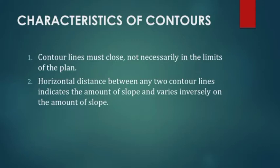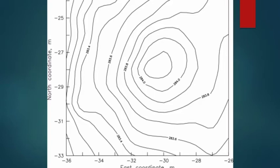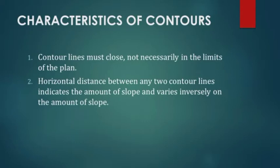Moving on to characteristics of contours — it is a main topic and there are almost 14 characteristics. First one: contour lines must close, not necessarily within the limits of the plan. That means all contour lines will be closing, but not necessarily inside the plan — some lines will be closing outside the plan, as you can see in the map.